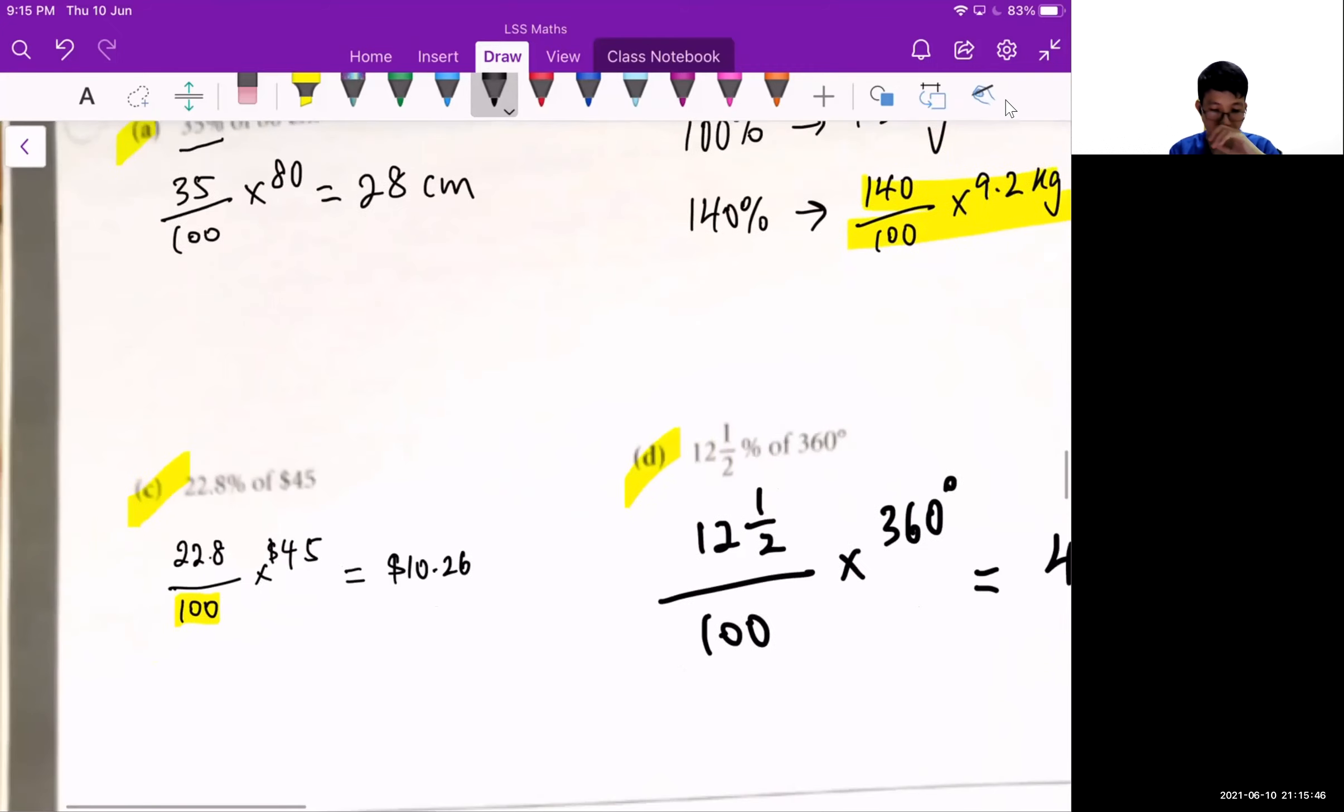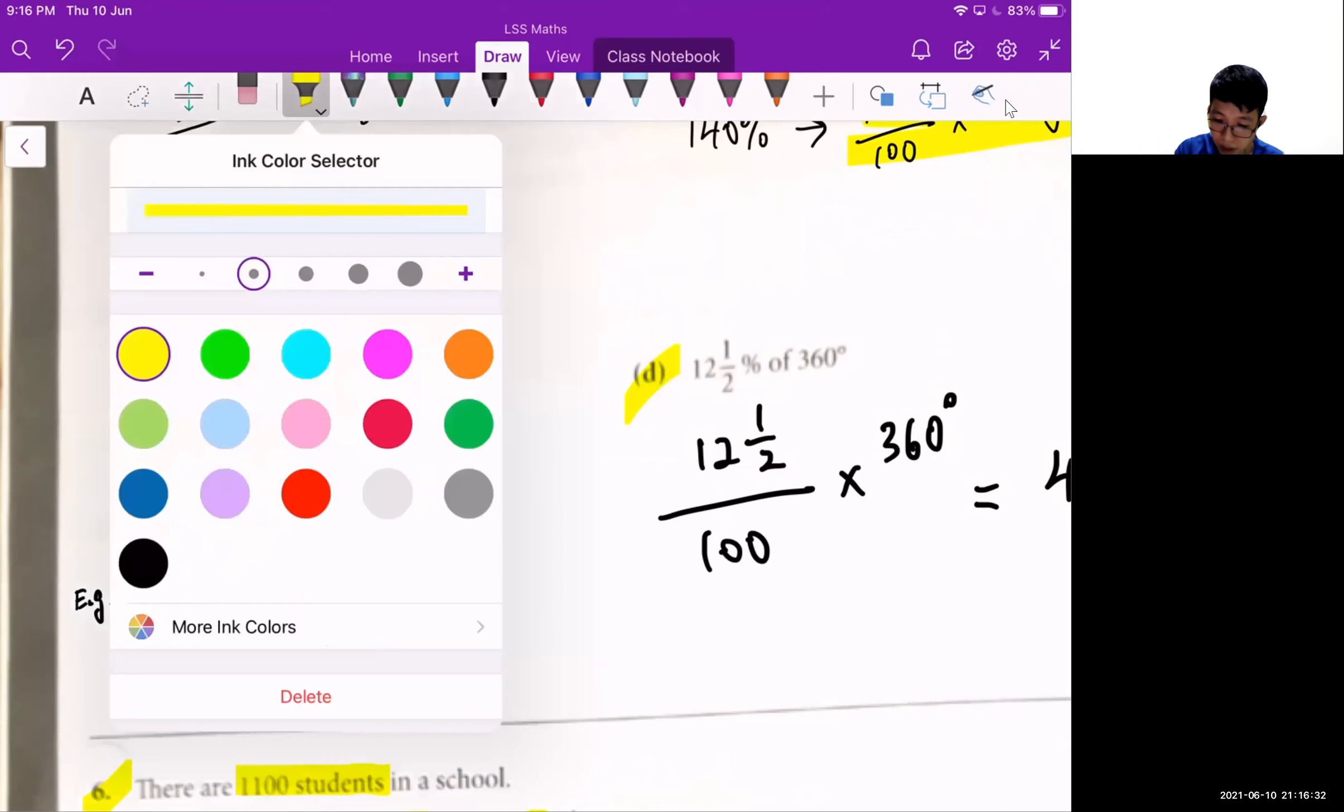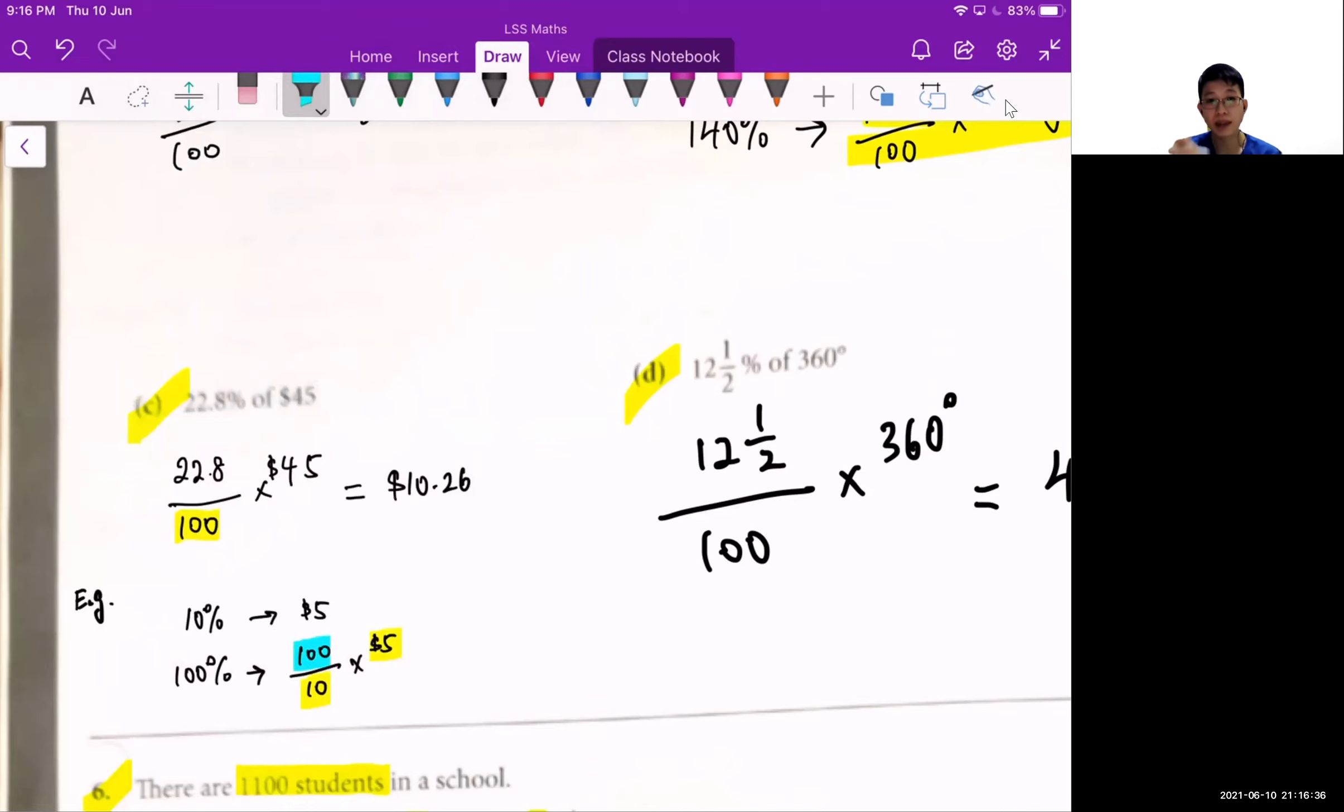So let's say, instead of giving 100%, I tell you that 10% of a number is $5. This is an example. Am I able to apply such method to find out what is 100%? 100% also can. So if you want to find 100%, I can take 100 over 10 times $5.